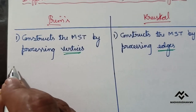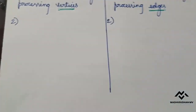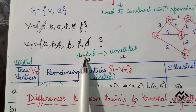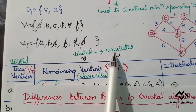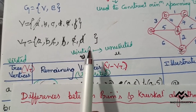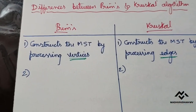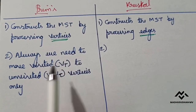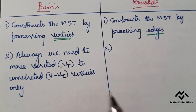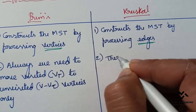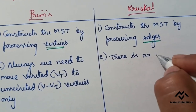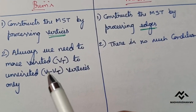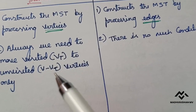The second difference: in Prim's algorithm, whenever we move from one vertex to another, it must be from a visited vertex to an unvisited vertex. That is the condition — the principle of Prim's algorithm. But in Kruskal's algorithm there is no such condition, so we can move from visited to visited, unvisited to unvisited, or unvisited to visited — anything is allowed.